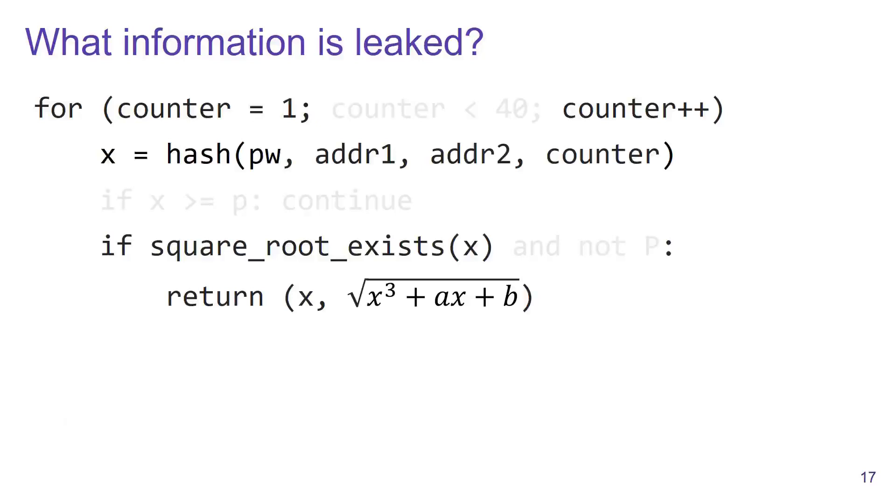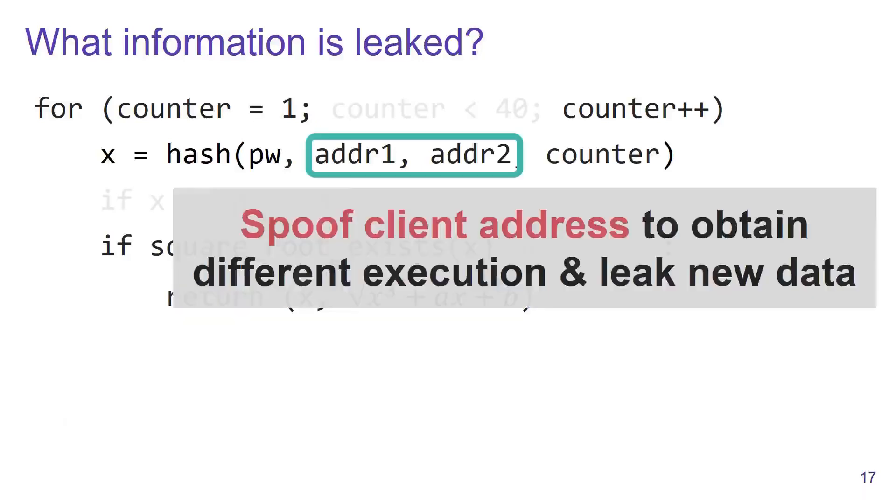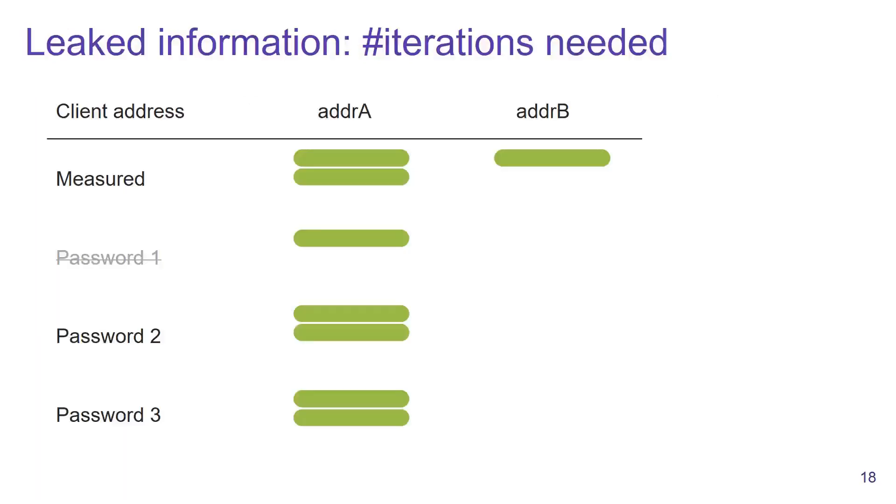So what we can do is spoof a different client MAC address and again measure how many iterations the access point executes. For example, we can spoof MAC address B and measure that the access point now executes one iteration.